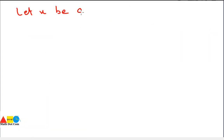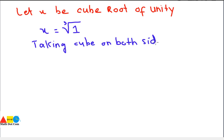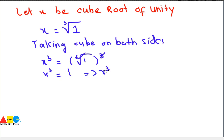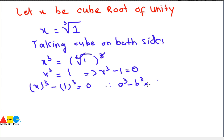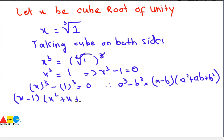Let x be the cube root of unity, so x equals the cube root of 1. Taking the cube on both sides, x cubed equals 1. We simplify: x cubed minus 1 equals 0. Using the formula a cubed minus b cubed equals (a minus b)(a squared plus ab plus b squared), we get (x minus 1)(x squared plus x plus 1) equals 0.